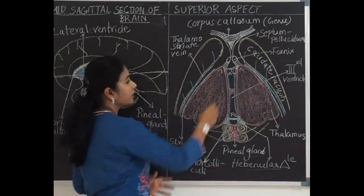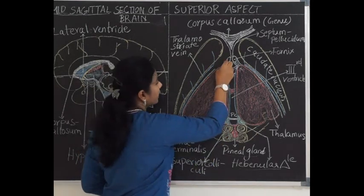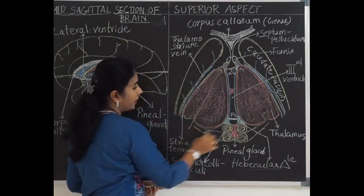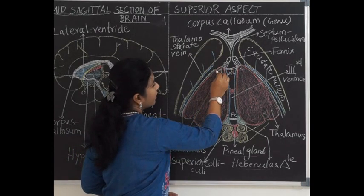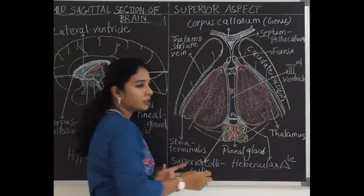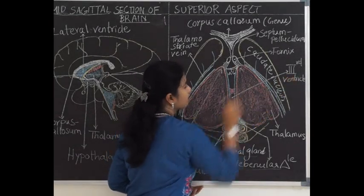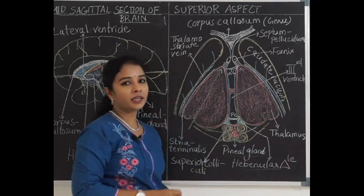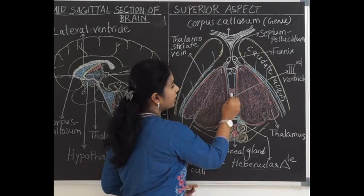The thalamus viewed from above has a narrow anterior end and a broader posterior end. The axis of the thalamus runs obliquely in a lateral-posterior direction. The anterior end is marked by the thalamic tubercle and the broad posterior end is called the pulvinar. The cavity between the two thalami is called the third ventricle and the two thalami are connected by gray matter called the interthalamic adhesion.